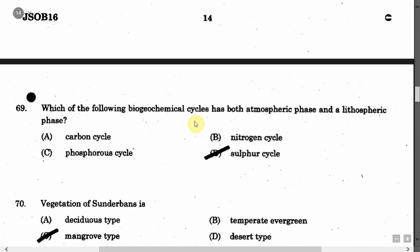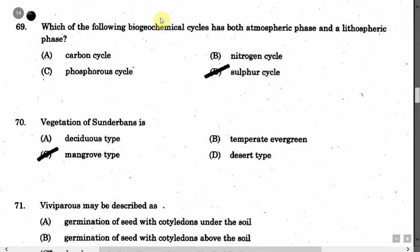The next question is: Which of the following biogeochemical cycles has both atmospheric phase and lithospheric phase? Option A: Carbon cycle. Option B: Nitrogen cycle. Option C: Phosphorus cycle. Option D: Sulphur cycle. The correct answer is Option D, that is Sulphur cycle.